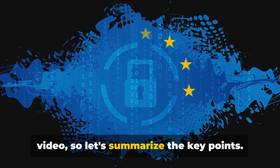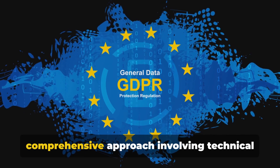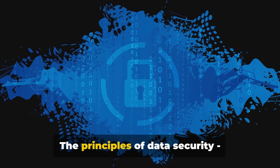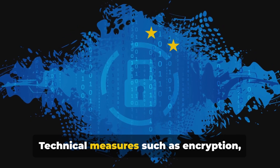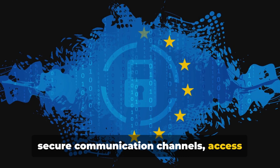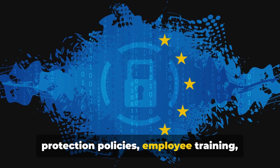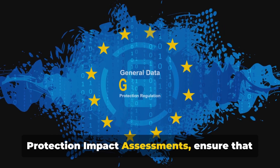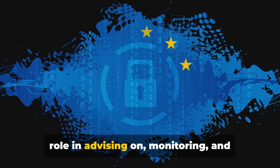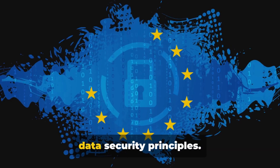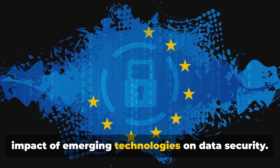We've covered a lot of ground in this video, so let's summarize the key points. Data security is a fundamental aspect of GDPR compliance requiring a comprehensive approach involving technical and organisational measures. The principles of confidentiality, integrity and availability guide our efforts to protect personal data. Technical measures such as encryption, secure communication channels, access controls and regular security assessments help prevent unauthorised access. Organisational measures — including data protection policies, employee training, incident response planning and DPIAs — ensure the organisation is prepared to respond to security incidents. The Data Protection Officer plays a vital role in advising on, monitoring and ensuring organisation-wide awareness of data security principles. We also discussed the importance of timely response to data breaches and the impact of emerging technologies on data security.